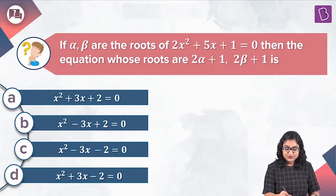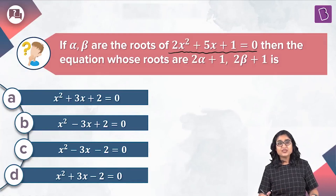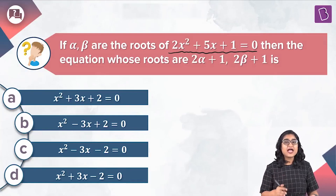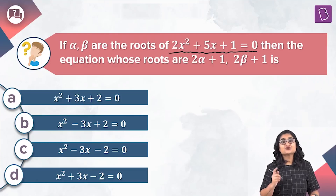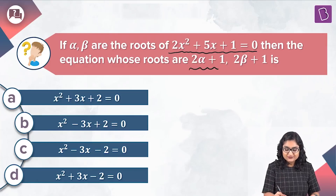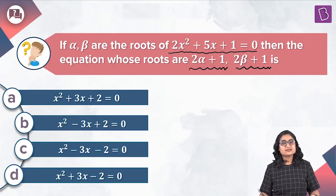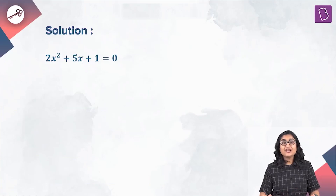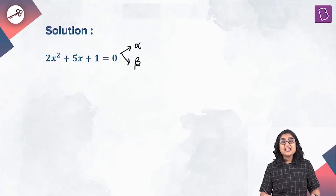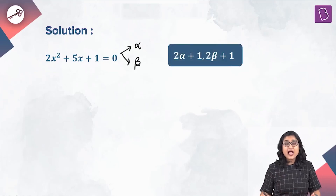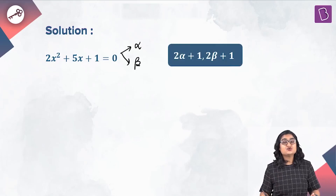In this question, we have been given a quadratic equation 2x squared plus 5x plus 1 equal to 0, and it's also given that alpha and beta are the roots of this quadratic equation. Then we have to frame a quadratic equation with roots 2 alpha plus 1 and 2 beta plus 1. This is the quadratic equation given to us, and it has 2 roots of the form alpha and beta.